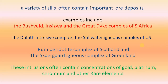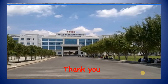A variety of sills often contain important ore deposits — the Bushveld Igneous Complex of South Africa, the Great Dyke complex of South Africa, the Duluth Intrusive complex, the Stillwater Igneous complex of the U.S., the Rhum Peridotite complex of Scotland, and the Skaergaard Igneous complex of Greenland. We can find a variety of dykes and sills in all these areas. These dykes and sills often contain concentrations of gold, platinum, chromium, and other rare earth elements. Thank you.